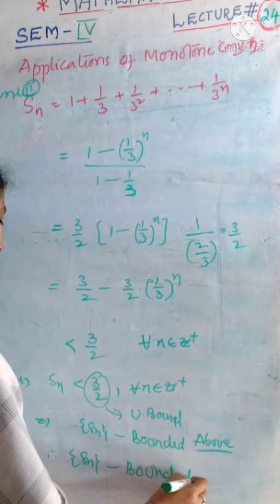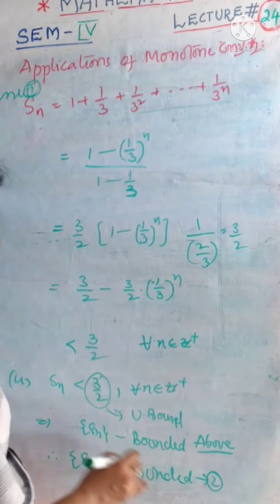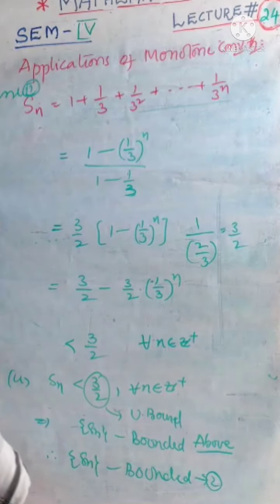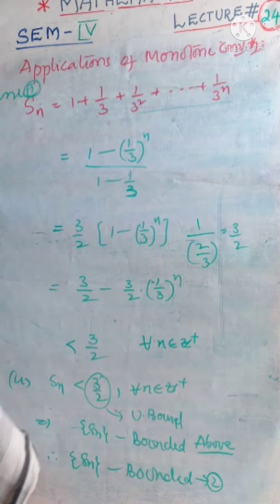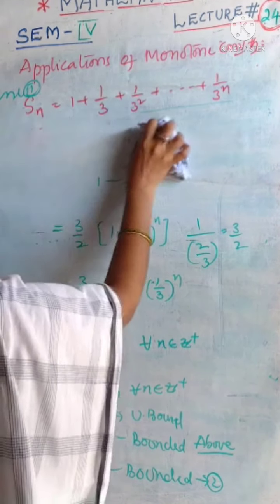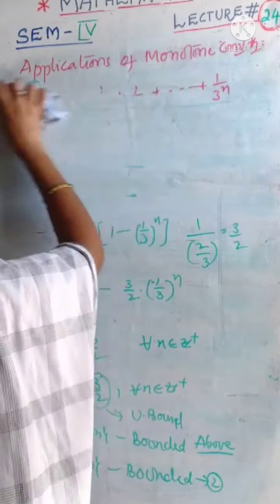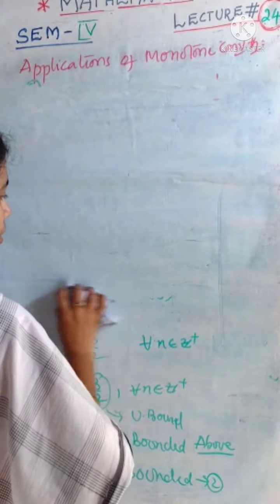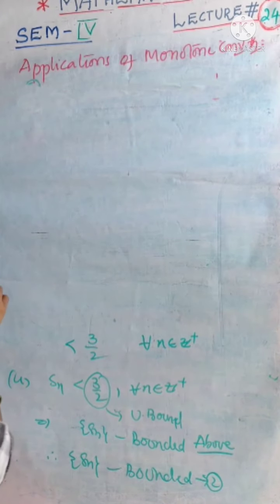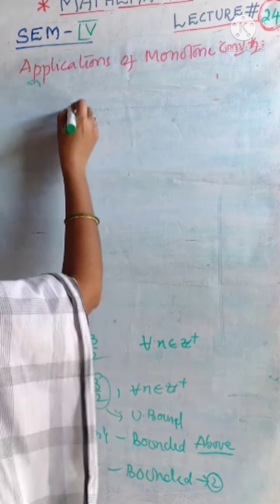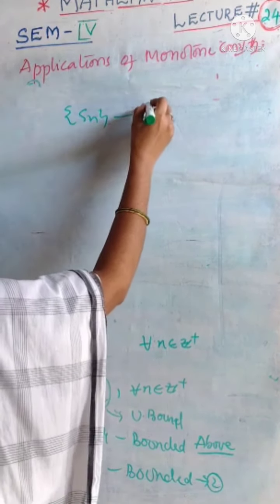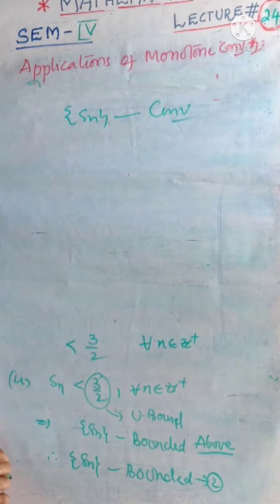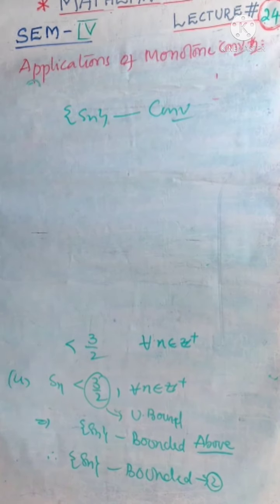Let it be case 2. From case 1, we confirmed that our sequence is a monotone sequence. From case 2, we have it is a bounded sequence. Then we can easily apply monotone convergent theorem. What it says? Whenever a monotone sequence is bounded, then we can easily say that sequence Sn is convergent by monotone theorem application. Thank you.